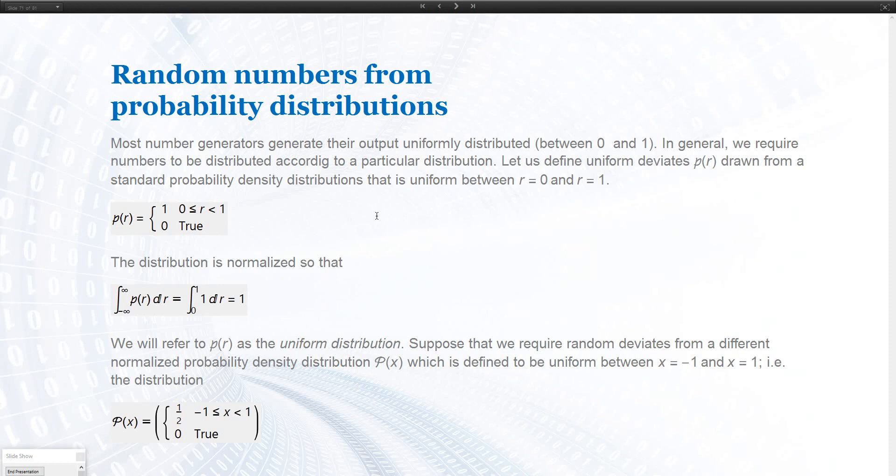Usually, if you have a number generator, the output is uniformly distributed. If you have a dice, a number generator generates numbers between 1 and 6. It generates uniformly distributed results. Every number is equally likely.